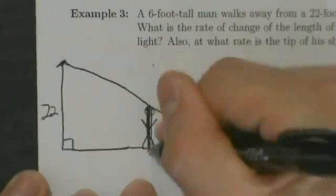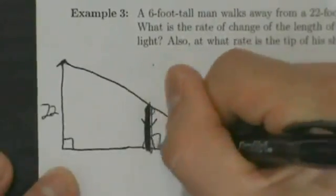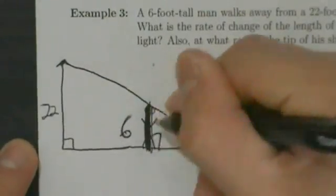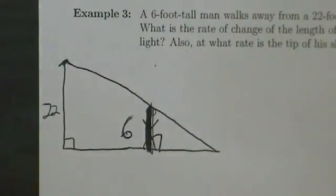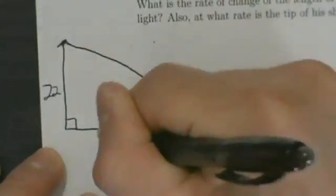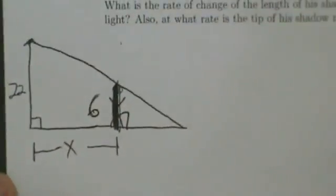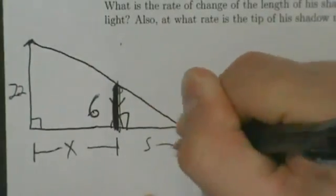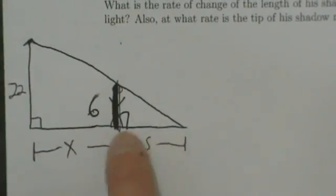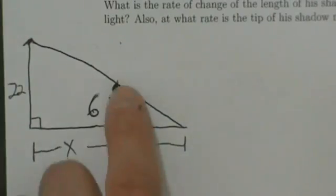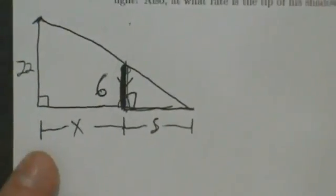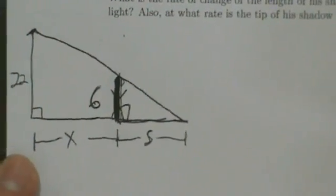Instead of drawing a man, let's just make him a straight line. What we have is a triangle inside of another triangle — similar triangles. The height of the smaller triangle (the man) is 6 feet. The distance between the man and the street light we'll call X, and the length of the shadow we'll call S.